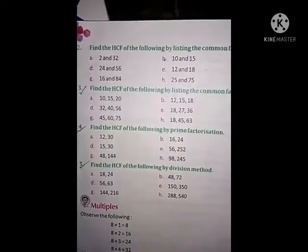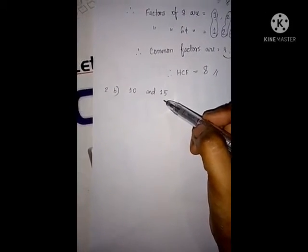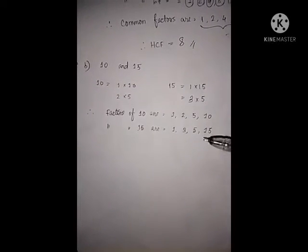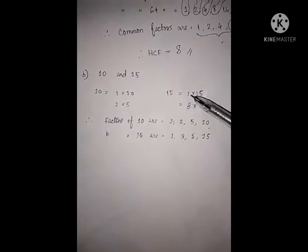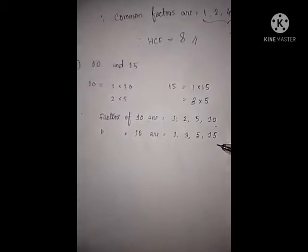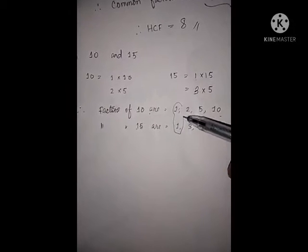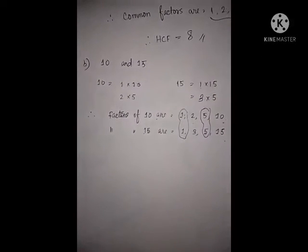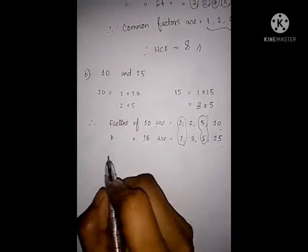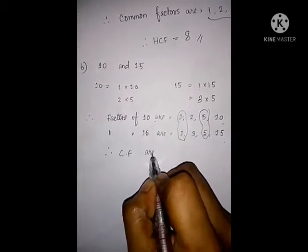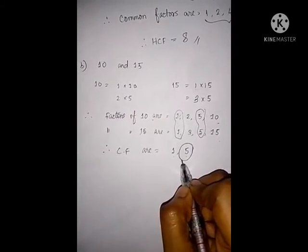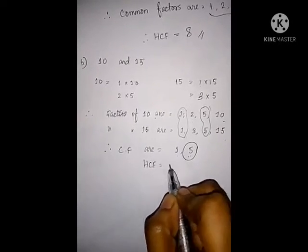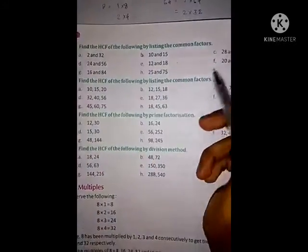Let's take Example B. Again, I am using multiplication to find out the factors. Factors of 10 are 1, 2, 5 and 10. Factors of 15 are 1, 3, 5 and 15. Let's see which are common: 1 is common and 5 is common between these two numbers. So the common factors are 1 and 5. Between 1 and 5, which is greatest? 5 is greater. So 5 is the HCF of 10 and 15.